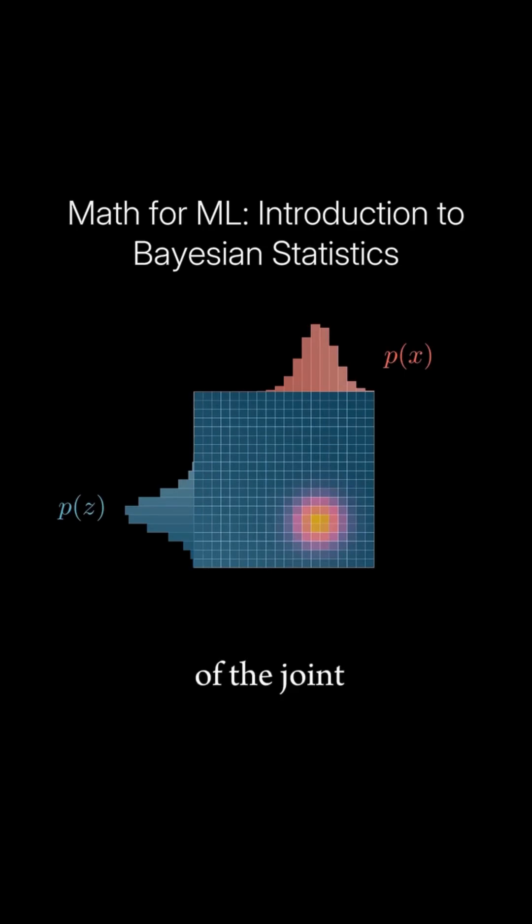An interesting property of the joint distribution is that we can use it to compute each of the marginal distributions. For example, to find the probability of sampling a specific value according to x, we integrate the joint distribution over all possible values of z.